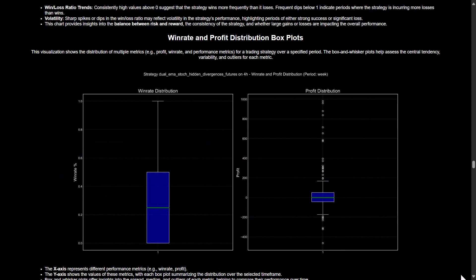The win rate distribution on the left suggests that the strategy has a relatively low to moderate win rate, as most values fall below the 50% mark. However, it does show some potential with a few weeks where win rates were much higher. On the right, you can see that the profit distribution appears to have a skew towards a few high outliers, meaning that the strategy's profitability is likely driven by a handful of very successful trades. Be aware that the presence of negative profits and losses, visible in the lower whiskers, highlight inconsistency.